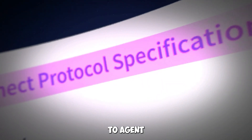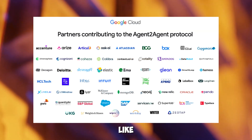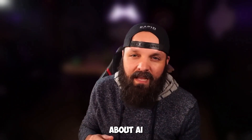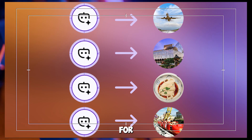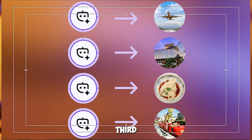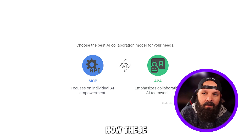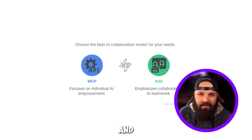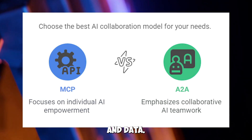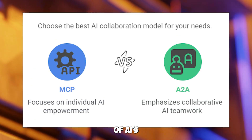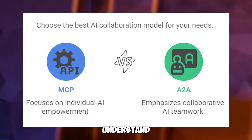A2A, or Agent-to-Agent protocol, is Google's big move, launched in April 2025 with over 50 industry partners like Salesforce, Accenture, and Uber. A2A is about AI agents talking to each other. Picture a team of specialized AIs — one for booking flights, another for finding hotels, and a third for updating your team — all collaborating like a well-oiled machine. A2A standardizes how these agents discover, communicate, and delegate tasks across different platforms. MCP empowers one AI with tools and data; A2A builds a dream team of AIs that work together.